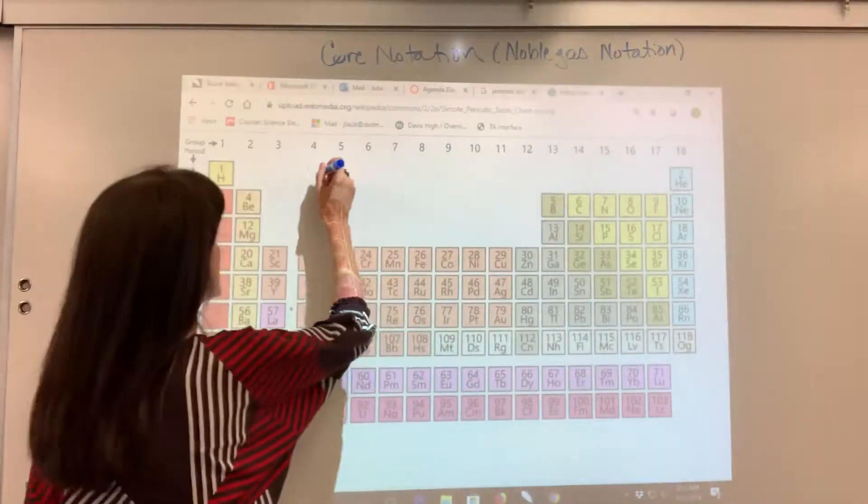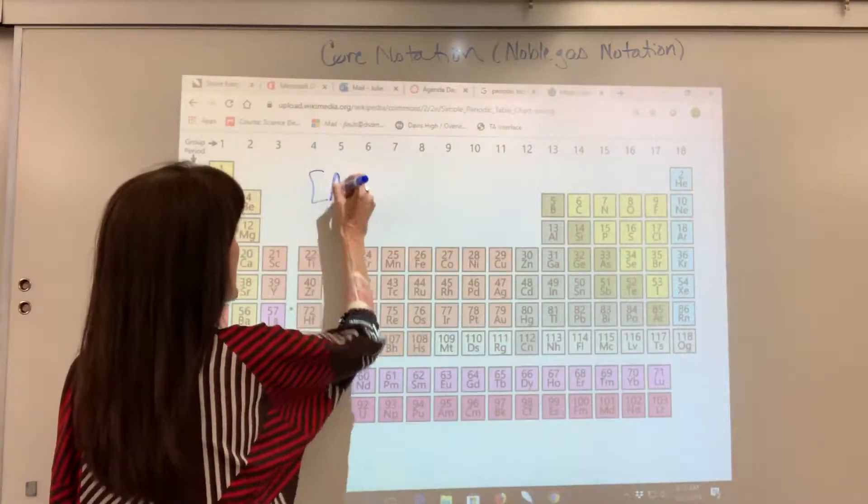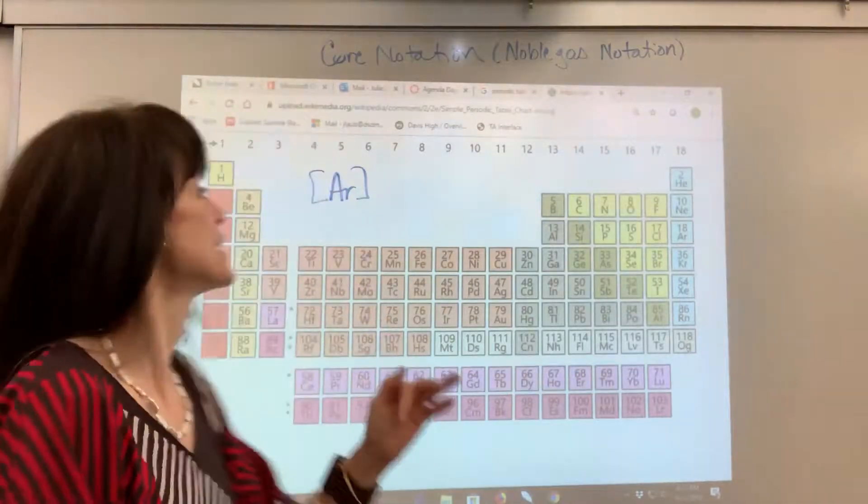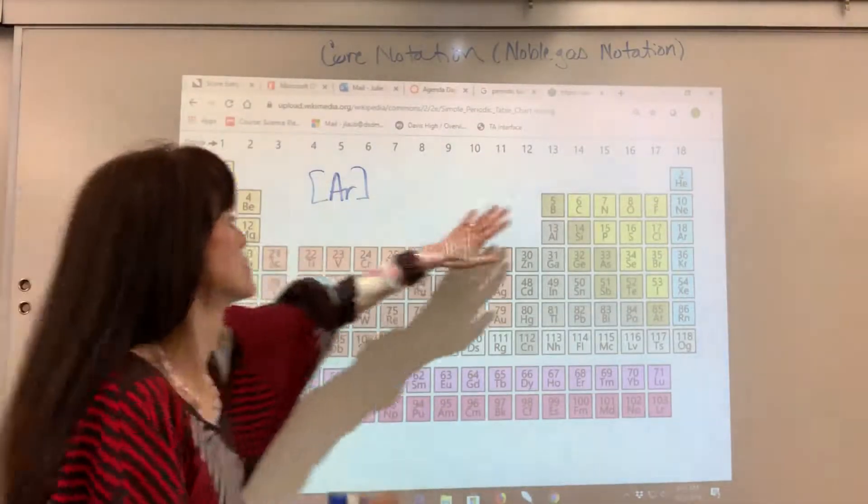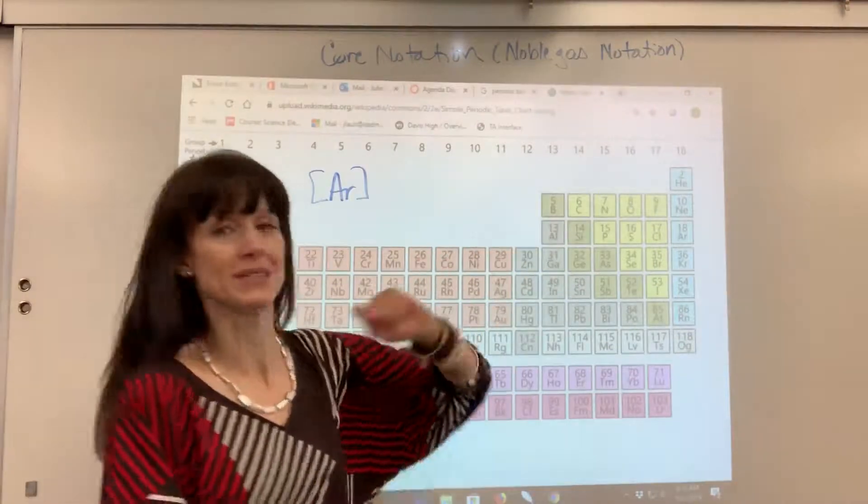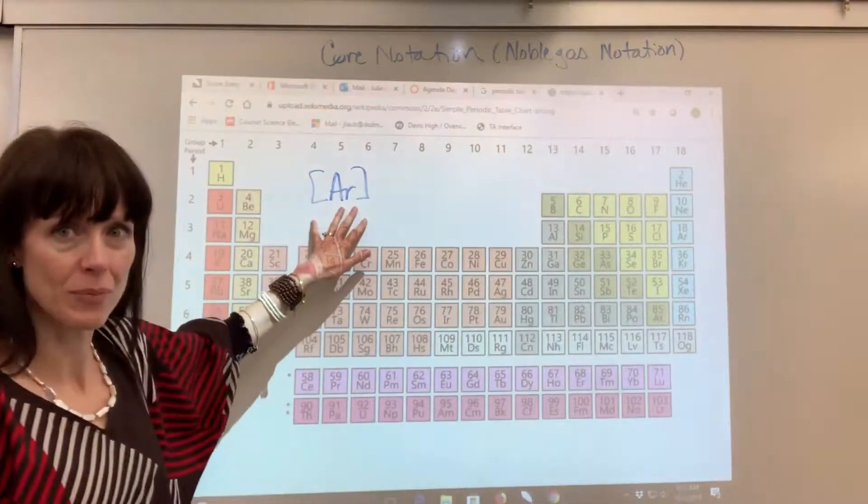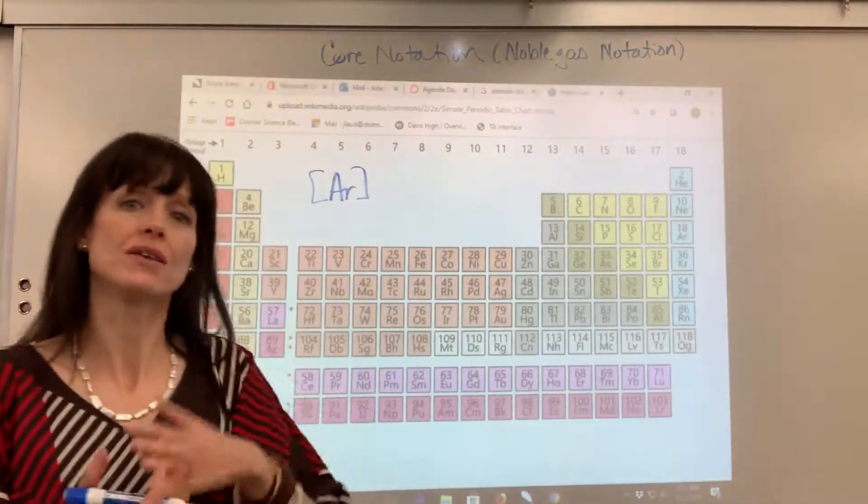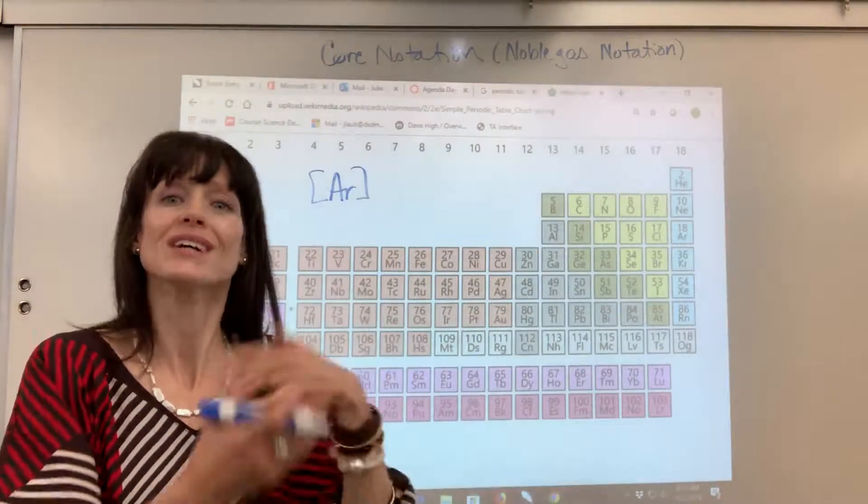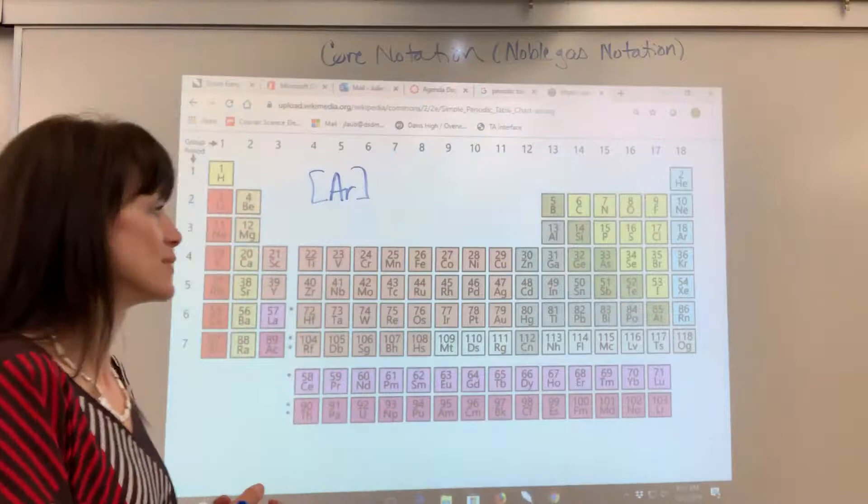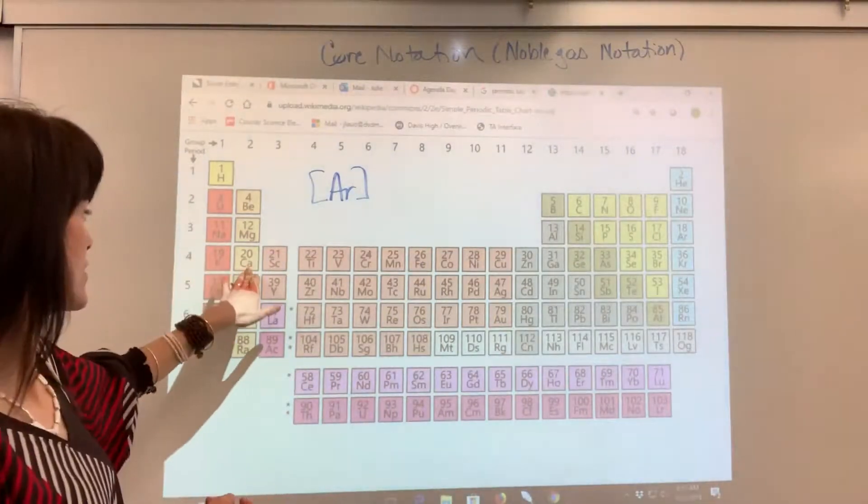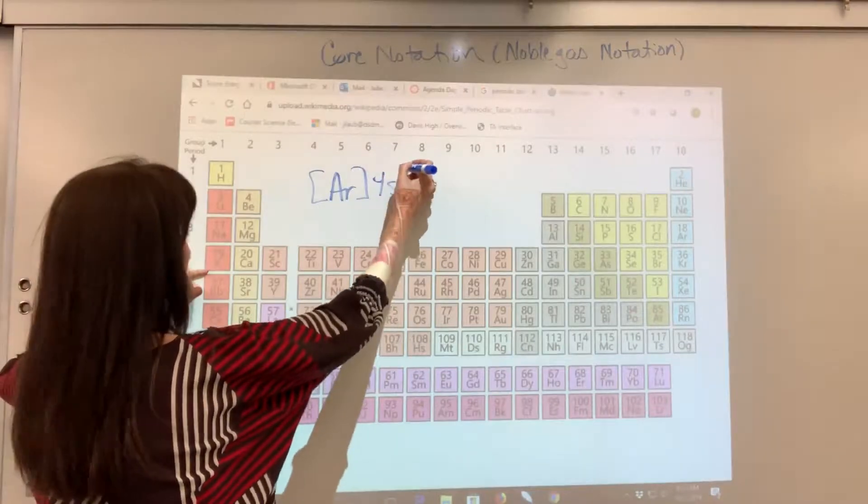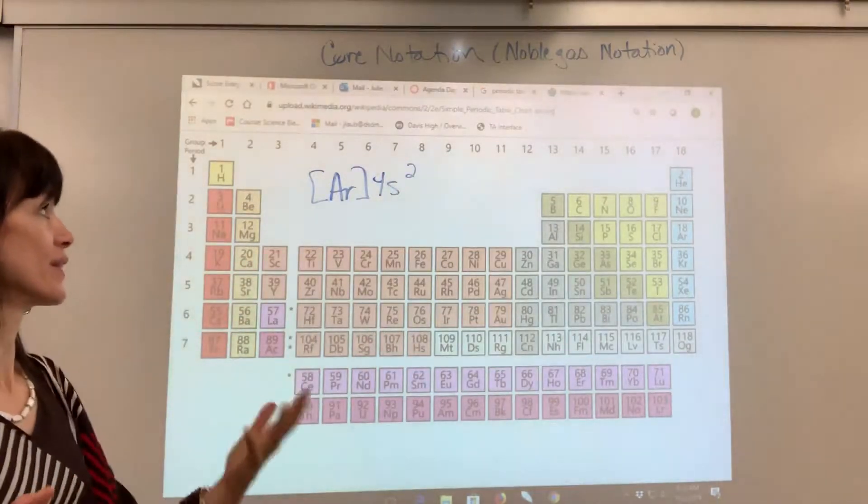So, you put the noble gas in brackets. Now, that argon in brackets represents 1s2, 2s2, 2p6, 3s2, 3p6. That's what the argon represents. After you write down the noble gas in brackets, then you write the remaining electron configuration to go ahead and finish to the element that you want. We want to finish at calcium. So, this is fourth energy level, S block, two electrons. There you have it.